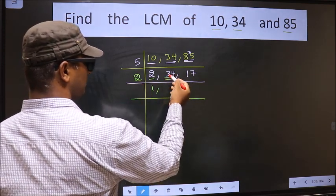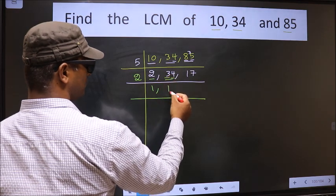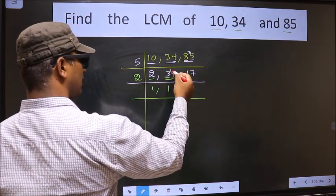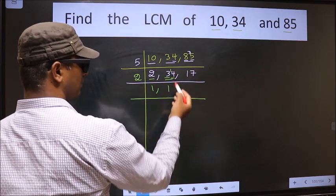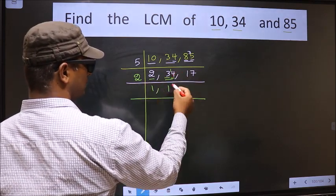First number 3. A number close to 3 in the 2 table is 2 once 2. 3 minus 2 is 1, 1 carried forward making it 14. When do we get 14 in the 2 table? 2 sevens 14.